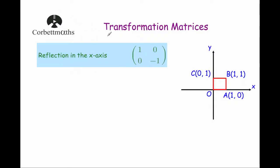Hi, welcome to this Quartermaster video on transformation matrices. In this video we're going to look at the transformation matrix 1, 0, 0, minus 1. That's the transformation matrix that reflects the shape in the x-axis. So if I've got this unit square, if I multiply each of these points by the transformation matrix 1, 0, 0, minus 1, it will reflect the square in the x-axis.